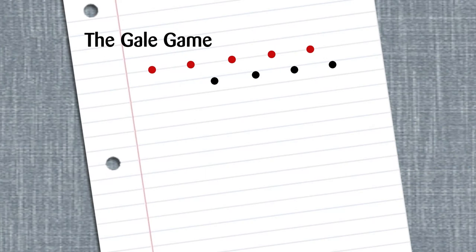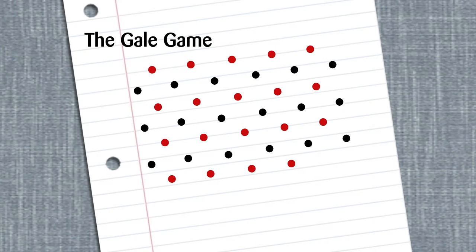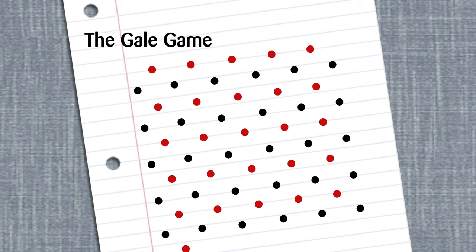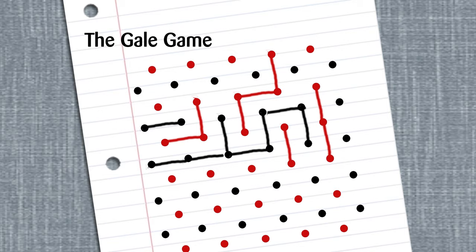Then in October of 1958, columnist Martin Gardner introduced the world to something called the Gale Game in Scientific American magazine. This was invented by yet another mathematician, David Gale, who was affiliated with Brown University. It consisted of two grids of differently colored dots, slightly offset from each other, and each player attempted to connect opposite edges of the board with a path connecting only dots of their own color. You could also block a connection by putting your line in there first.